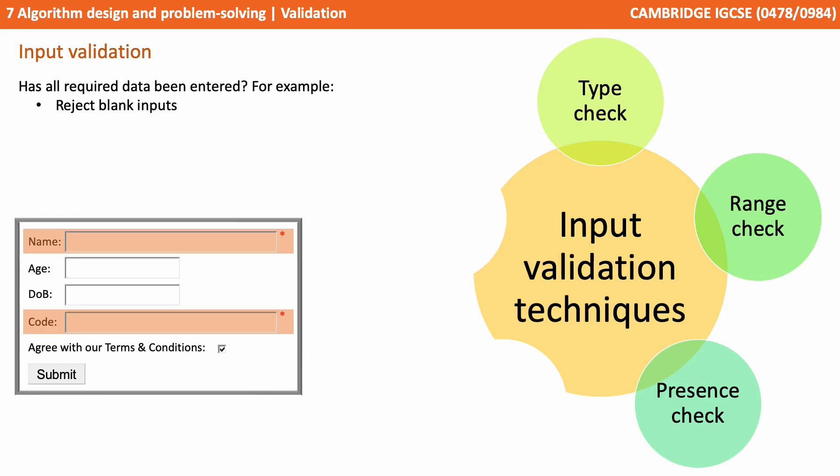So on this form, you can see that the name field and the code field both have little red asterisks next to them, indicating that these are mandatory fields. They're not optional. They can't be left blank.